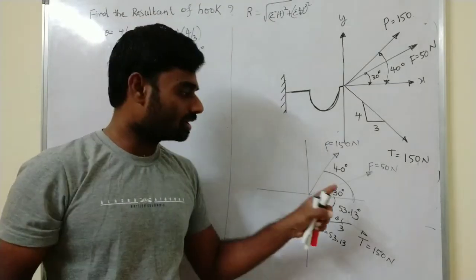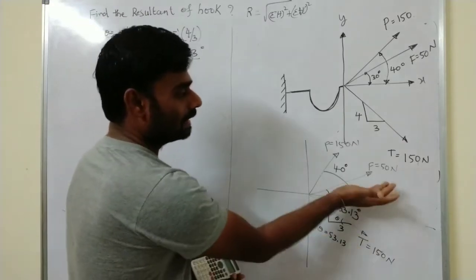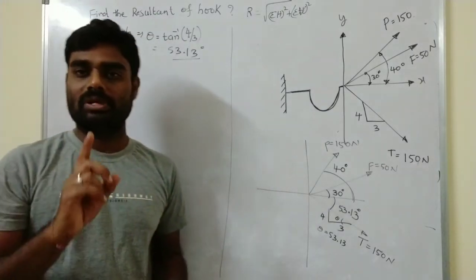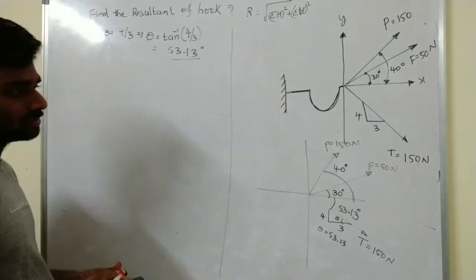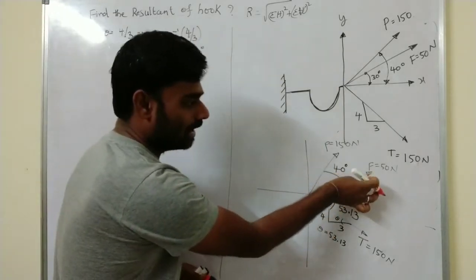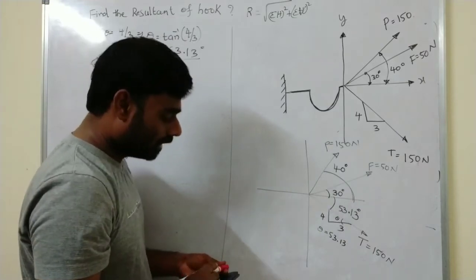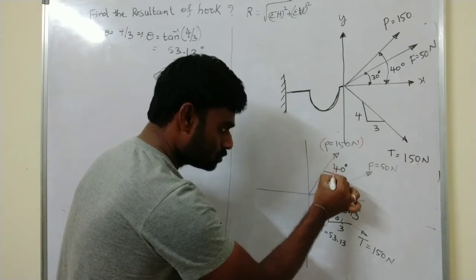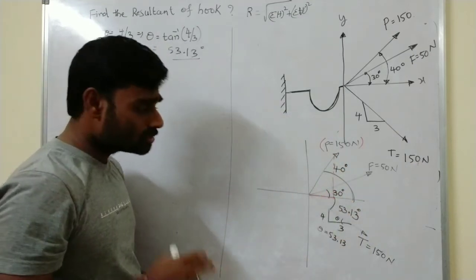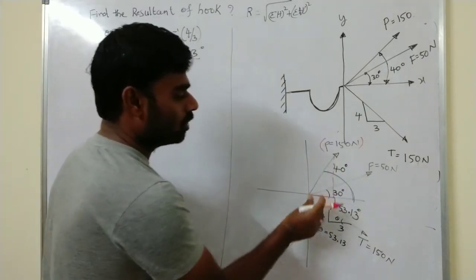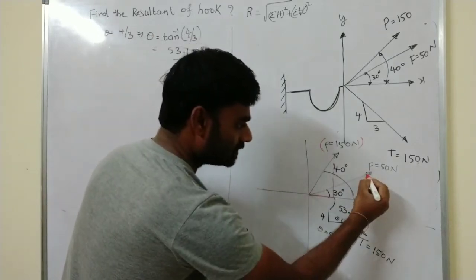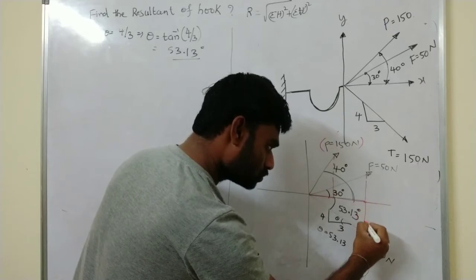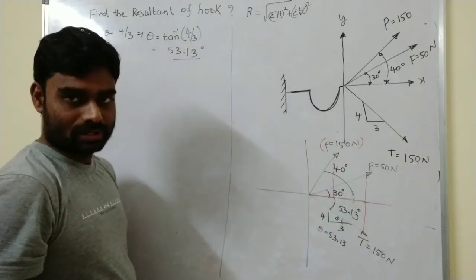To find ΣH and ΣV: ΣH means the sum of all horizontal forces. Forces T, F, and P are all inclined forces, so we resolve each into two components — one horizontal and one vertical. Each force is resolved into a horizontal component and a vertical component.